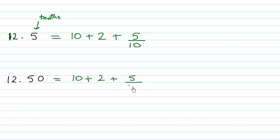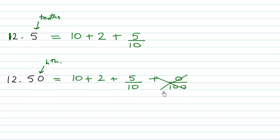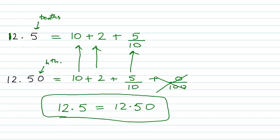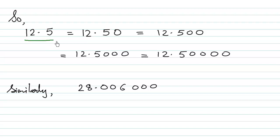12.5 expanded is: 10 plus 2 plus 5 upon 10, plus 0 upon 100 — because the digit in the hundredths place is 0. But we can simply ignore 0 upon 100, since 0 upon anything except 0 is 0. So we can totally ignore this term. If you compare, both forms are exactly the same because 0 upon 100 is 0, and adding or subtracting 0 makes no difference.